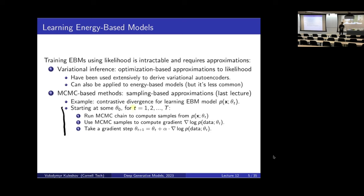To remind you how slow and complex this procedure can be: if we want to approximately learn an energy-based model using MCMC, the procedure would look like this. For each step in our optimization procedure, we try to compute the gradient of the likelihood. But in order to compute the gradient of the log likelihood, we can't get the exact gradient because that would require computing the partition function. Therefore, we approximate this gradient by taking samples from the distribution using a Markov chain Monte Carlo algorithm, then use these samples to compute an approximation to the gradient, and take a gradient step. Essentially, at every step of gradient descent, we have to run a Markov chain, which is very slow.